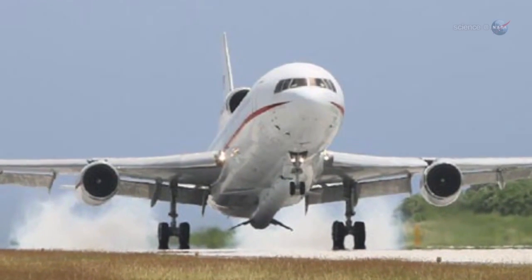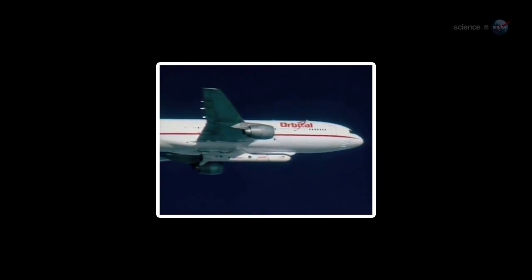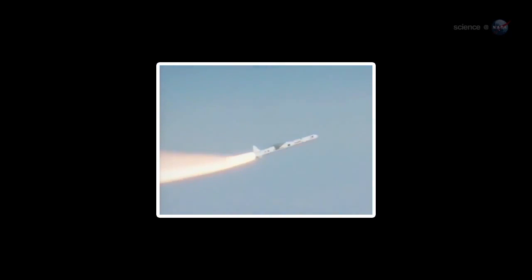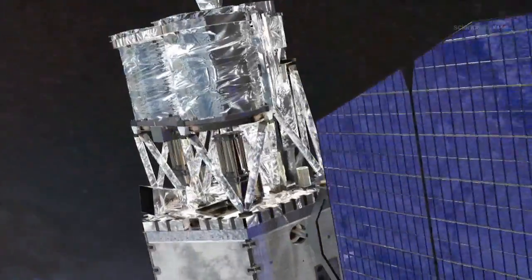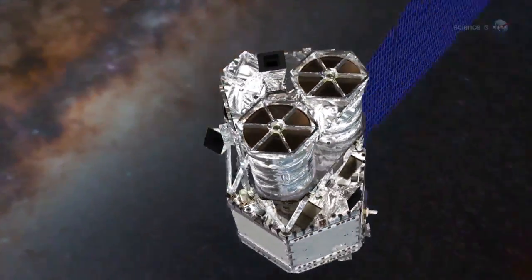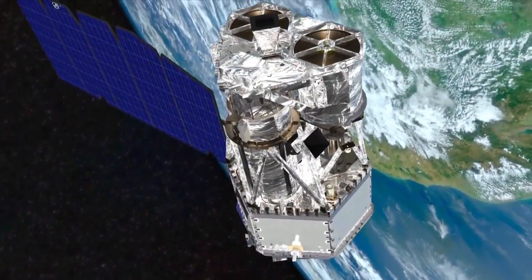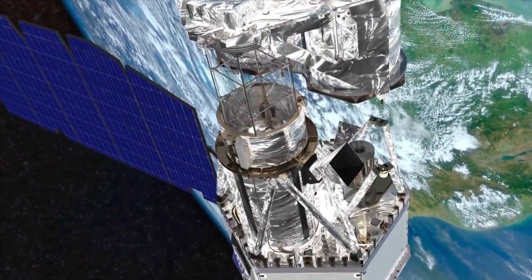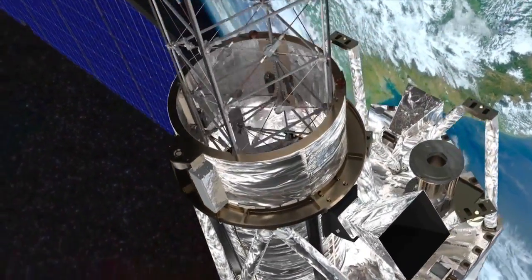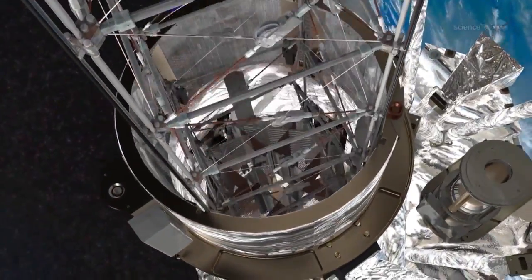Launched on June 13, 2012, onboard a Pegasus XL rocket dropped from an airplane high above the Pacific Ocean. NuSTAR is a small explorer satellite that carries the first space telescope that can focus very high-energy X-rays. NuSTAR will produce images roughly 100 times sharper than those possible with previous high-energy X-ray telescopes.